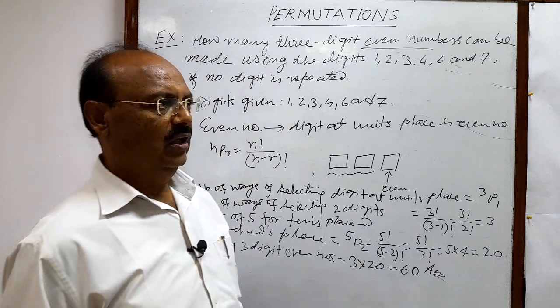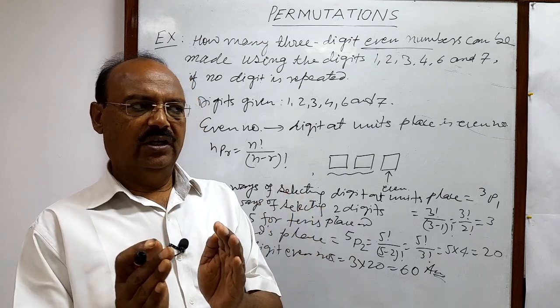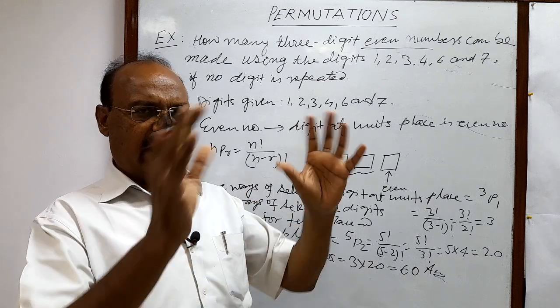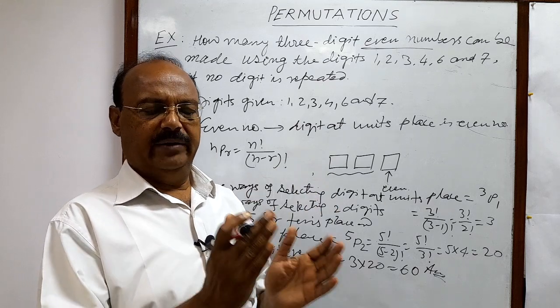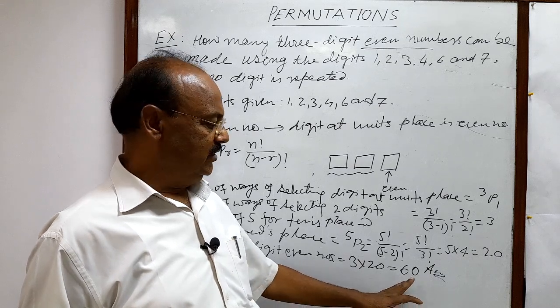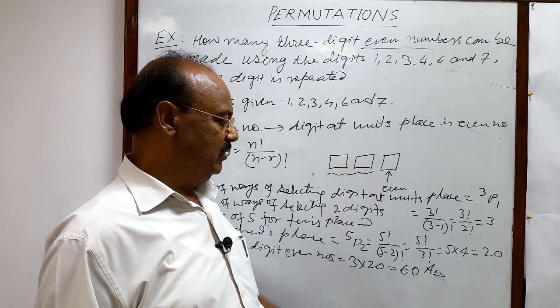So we should note here that if one part of the job has been done in m ways and rest of the part has been done in n ways then this entire job will be done in m into n ways. So 3 into 20 ways that is 60 ways means 60 numbers are here that will be formed which will be even numbers.